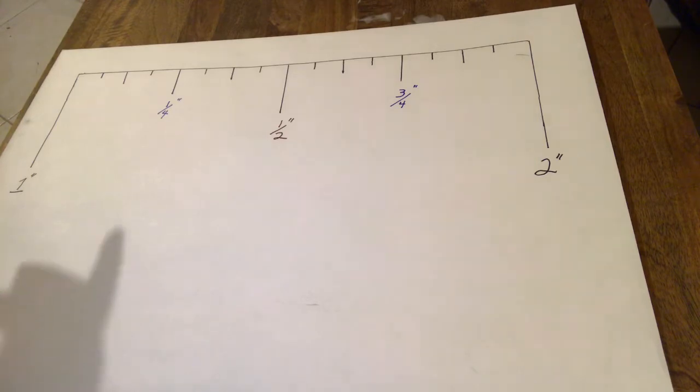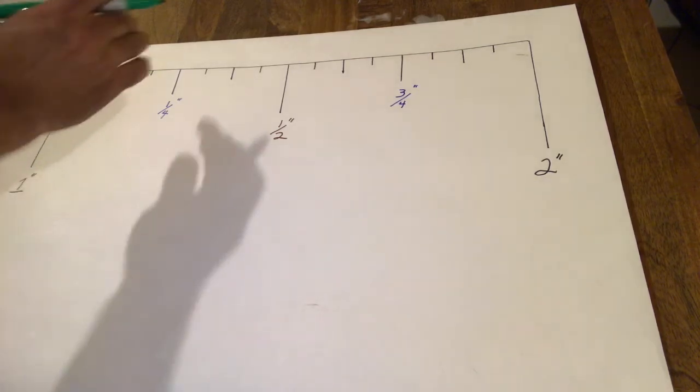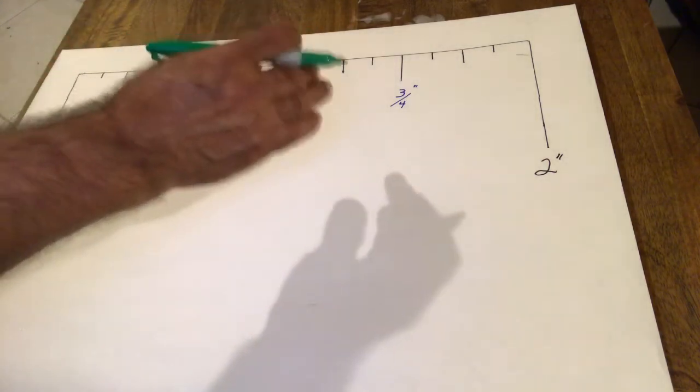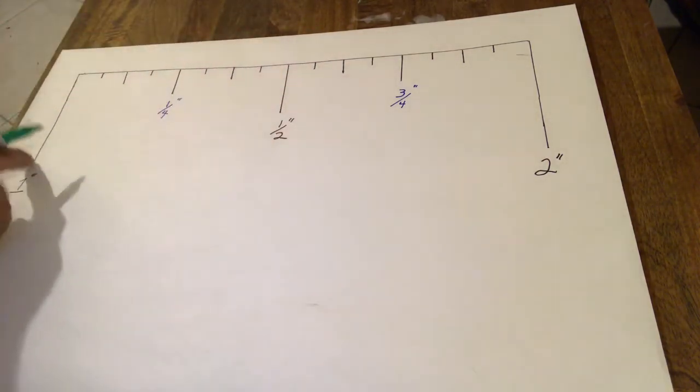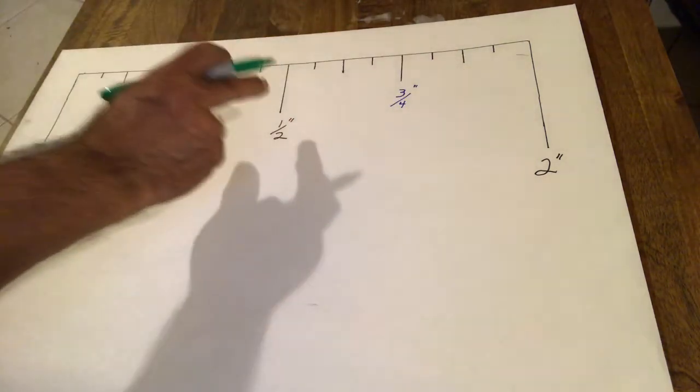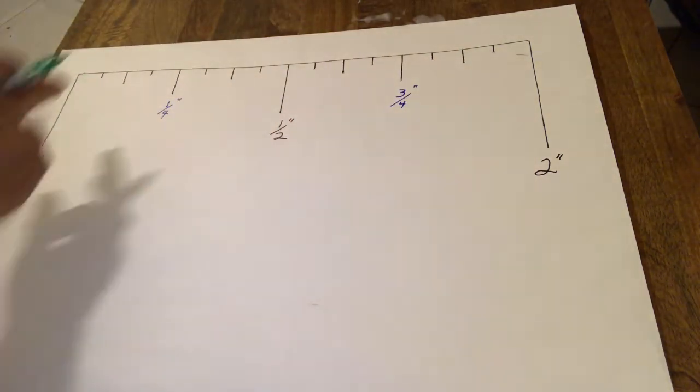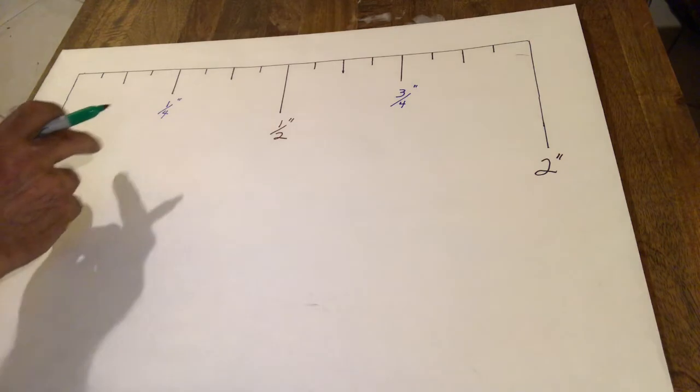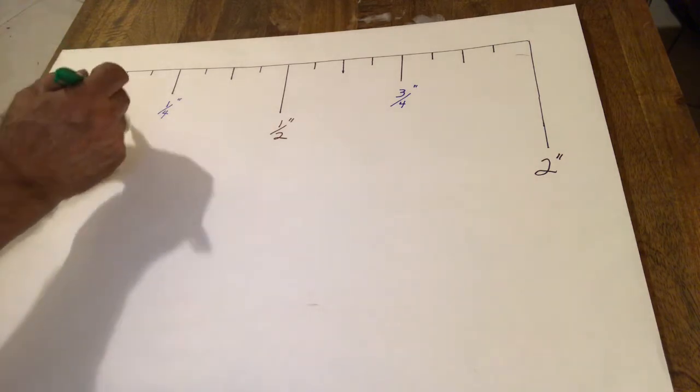Now, we go to the next tick mark. You can see how your tick marks are longer, so that you can identify between your inch marks, your next one is your half, your next one is your quarters, and then your next one is your eighths.